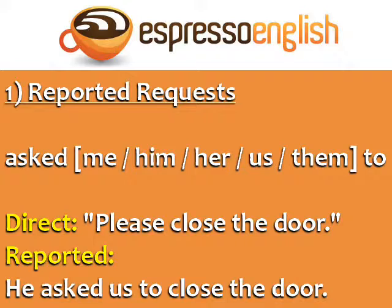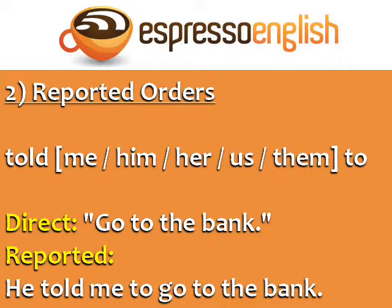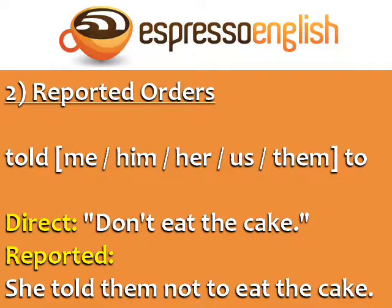In the case of reported requests, the main verb does not change. It is 'close' in the direct statement and 'close' in the reported statement. For reported orders or commands, use the structure: told me, him, her, us, or them to. For example — Direct: 'Go to the bank.' Reported: 'He told me to go to the bank.' Direct: 'Don't eat the cake.' Reported: 'She told them not to eat the cake.'